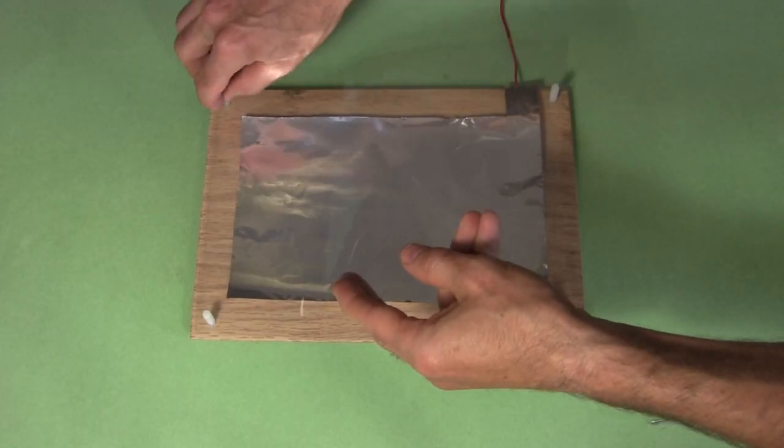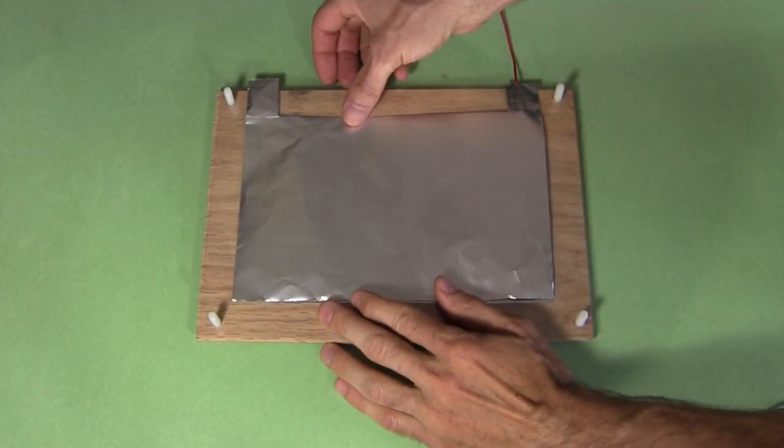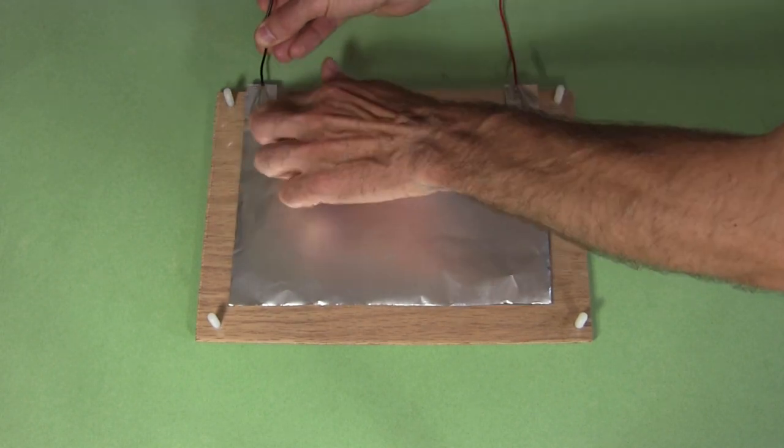Then comes another transparency. And that's followed by another foil with the tab closer to the other end. Again I attach a wire, a black one this time because it'll be connected to ground.